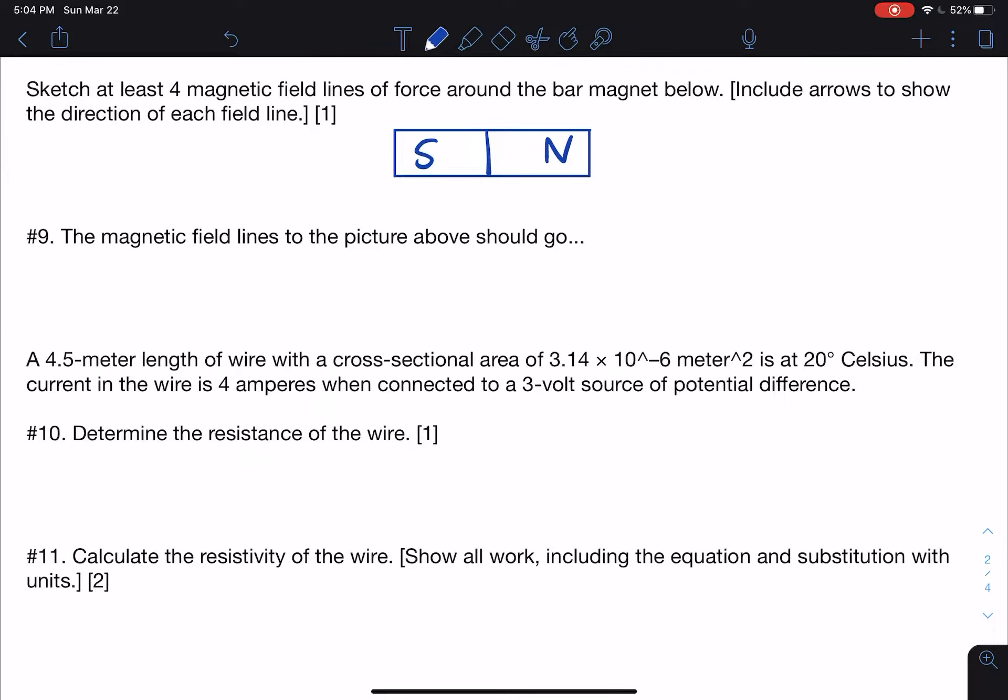Continuing on with the review packet, the online review packet for unit 5, question number 9 relates to magnetic fields. So it says, sketch at least four magnetic field lines of force around the bar magnet below. Include arrows to show the direction of each field line.